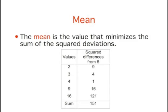The mean is the value that minimizes the sum of the squared differences. Here, you can see that the sum of the squared differences from 5 is 151. For example, the difference between the first value of 2 and 5 is 3. Square 3 and you get 9, which is shown in the second column. The sum of squared differences from the mean of 6.8 is only 134.8.